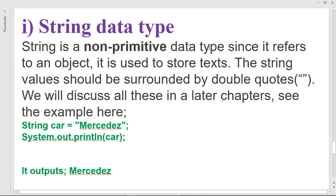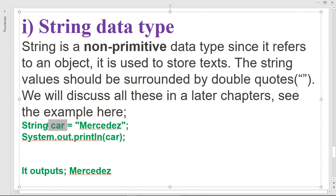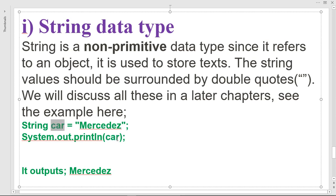For example, you can write 'String car = "Mercedes"' and then use System.out.println(car), which will print out the value Mercedes. As we discussed with variables, we also showed how to print this out in NetBeans IDE.